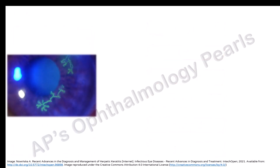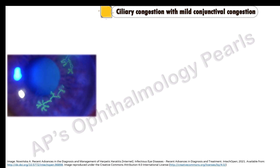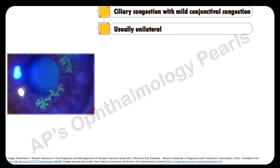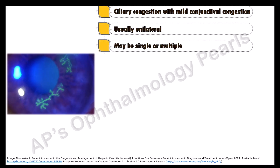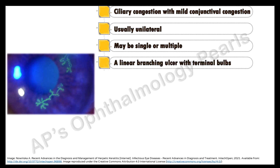Signs include ciliary congestion with mild conjunctival congestion. The dendritic ulcer is usually unilateral. It may be single or multiple, but more commonly single. It is seen as a linear branching ulcer with terminal bulbs, which are characteristic of herpes simplex etiology.